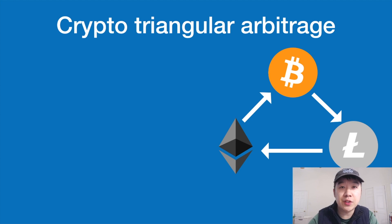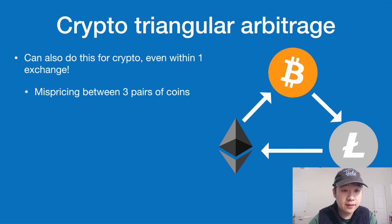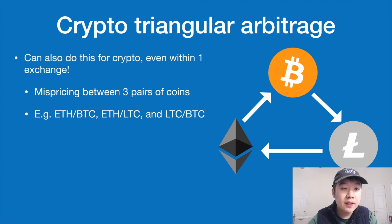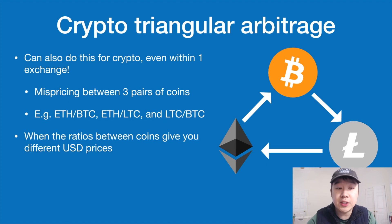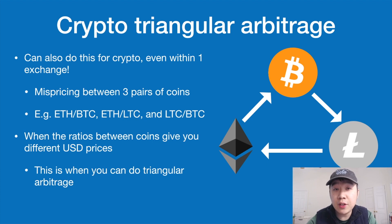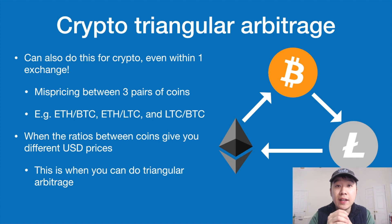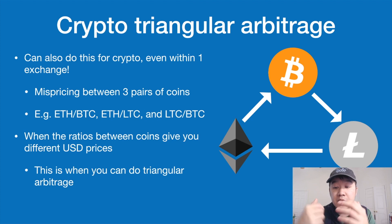You can also do triangular arbitrage with crypto, even within a single exchange. You take advantage of mispricing between three pairs of coins — for example, ETH/BTC, ETH/LTC, and LTC/BTC — they form a kind of triangle. The ratios between the coins are denoted in USD value on CoinMarketCap. Because Ethereum-to-Bitcoin and Litecoin-to-Bitcoin are separate markets with different supply and demand, you can go through the pairs to capture that price differential and end up with more of whatever coin you're targeting. Bots are also available to do this.